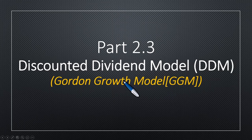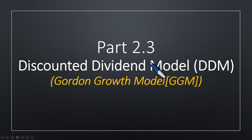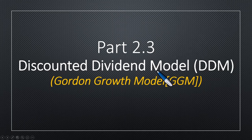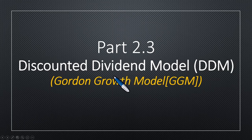If you have not watched that part, you can click on the card up here. Then we go to part two. This is the third part of part two. The first part of part two, we looked at the one-period dividend discount model. If you have not watched that, you can click on the card here. Then the second part of part two, we looked at the multi-period dividend discount model. If you have not watched that, kindly click the card up here.